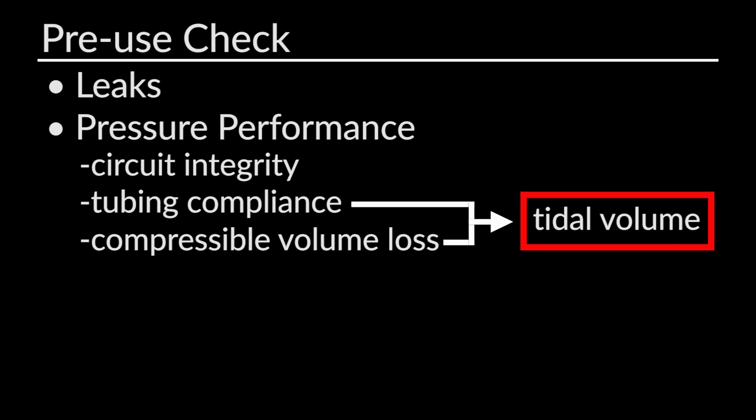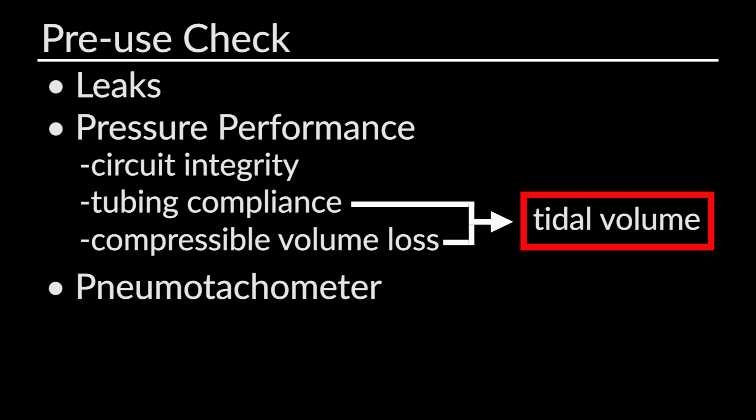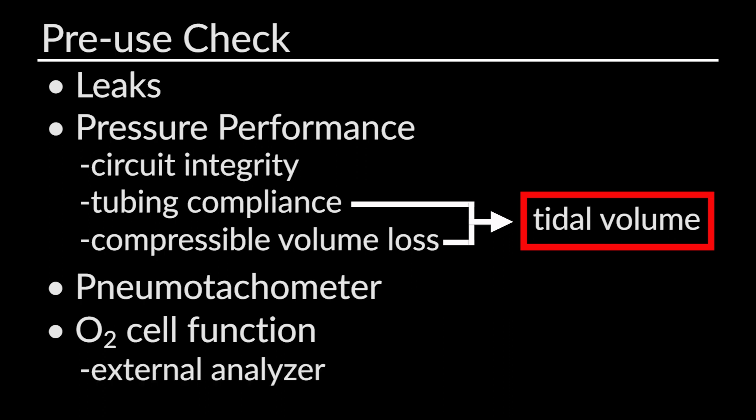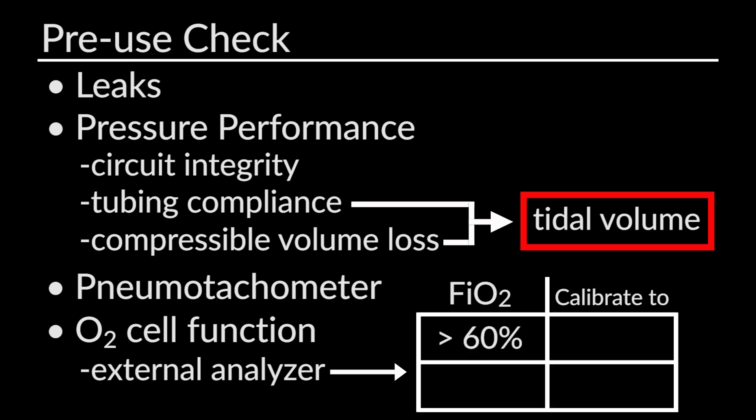The pre-use check will also assess the pneumotachometer within the ventilator, zero it, and ensure that it is functioning properly. The last stage of a pre-use check is to assess oxygen cell function. A zero must be conducted. If it is an internal analyzer, this will be done within the ventilator during the pre-use check. If it is an external analyzer, it is up to the clinician to calibrate their oxygen sensor. I recommend that any FiO2 greater than 60% be calibrated to 100%, and if less than 60%, calibrate to room air or 21%. Some analyzers may require a two-point calibration, conducting both a 100% FiO2 and a 21% room air calibration.